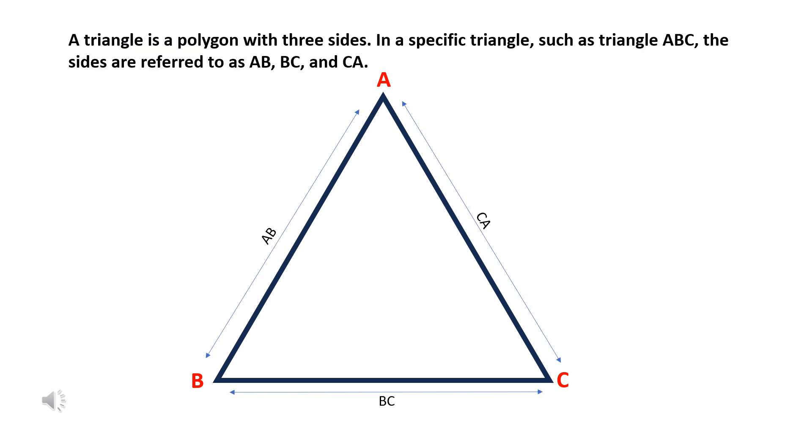A triangle is a polygon with three sides. In a specific triangle, such as triangle ABC, the sides are referred to as AB, BC, and CA.